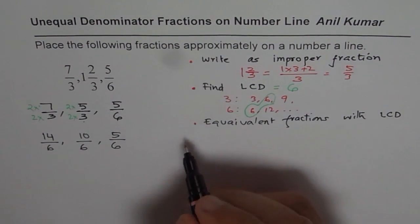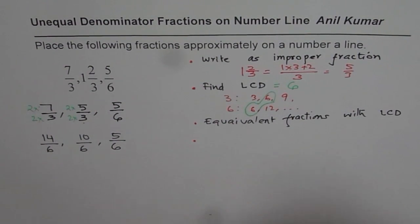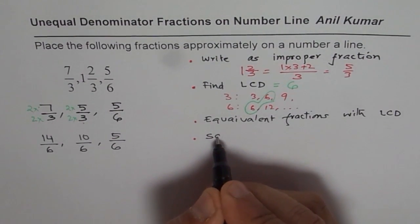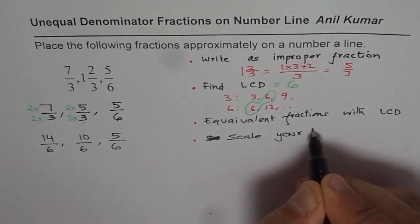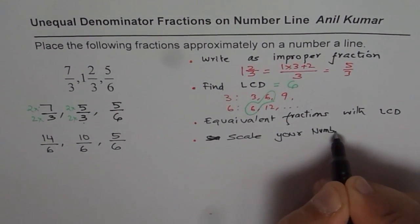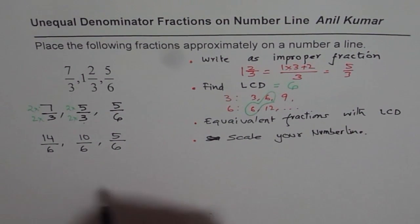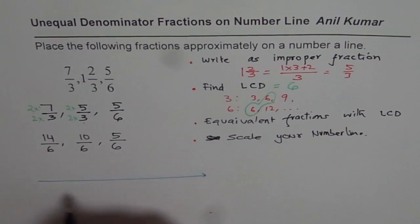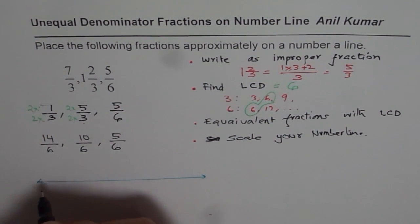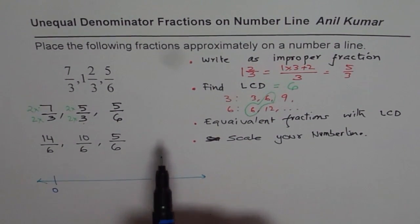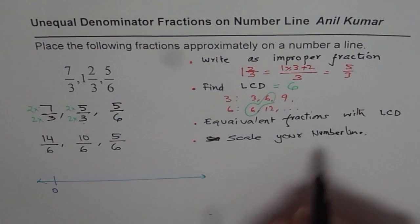We have now 3 fractions which have same or equal denominators. Now it becomes simpler to place them on a number line. So now what we will do is we'll scale your number line. Approximate really means that I will not use any scale, but I'll make my own.